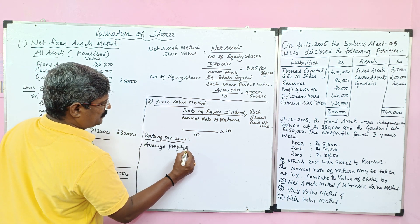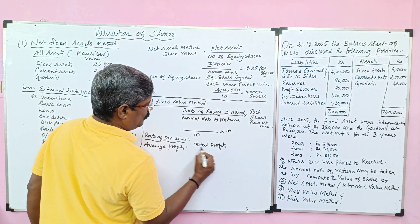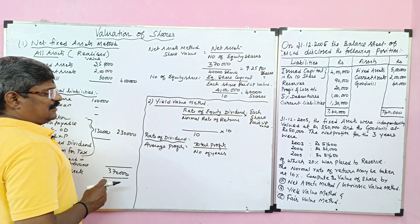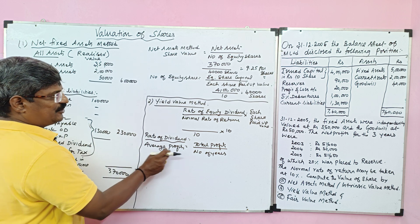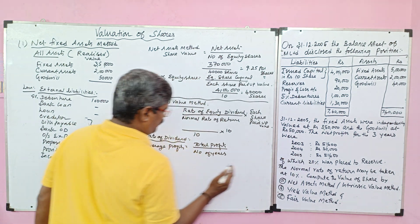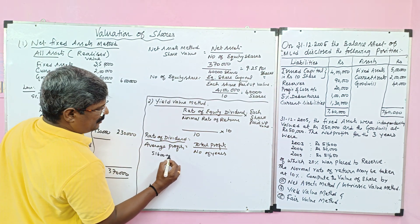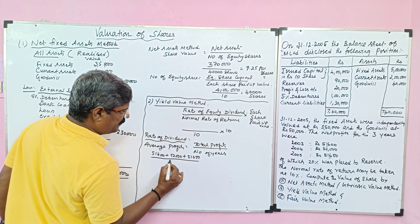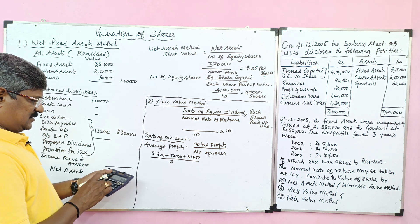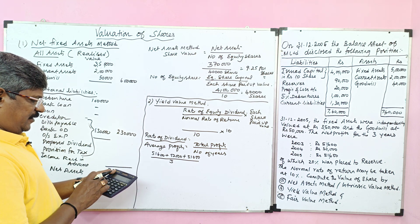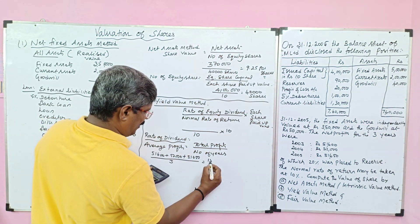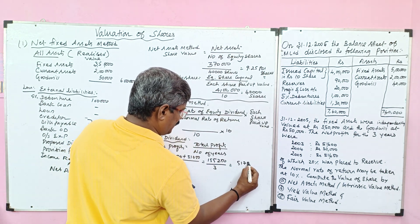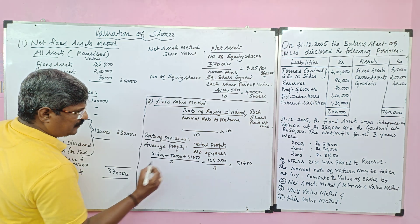First, we calculate the average profit. Formula: total profit divided by number of years. We add all profits: 51,600 + 52,000 + 51,650 = 1,55,250 divided by 3 years. The average profit is rupees 51,750.